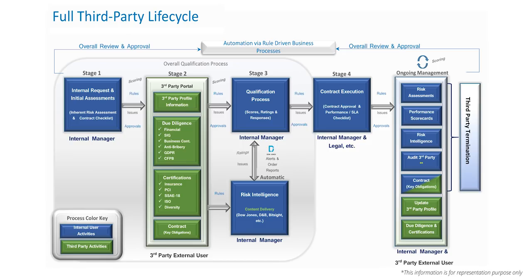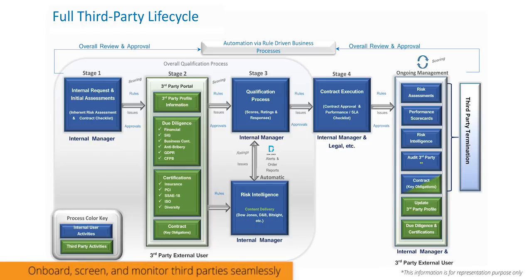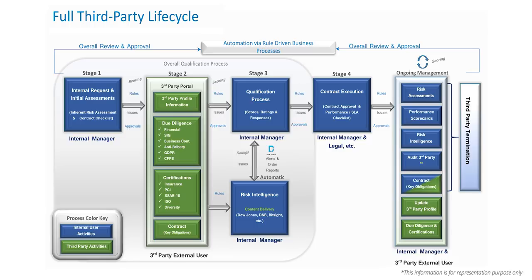Today we'll be going through MetricStream's full third-party management lifecycle with a single view of the third party and business insight through reporting. Stage one covers your ability to add a new third party using a dynamic risk assessment, which uses rules to send out specific due diligence questionnaires and certifications based on inherent risk scores. MetricStream's workflow capabilities allow you to create approval processes and review cycles through all stages.